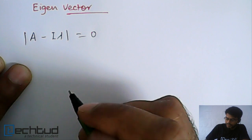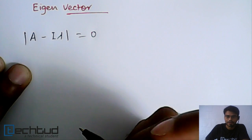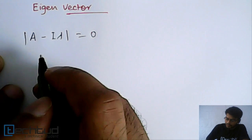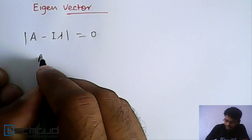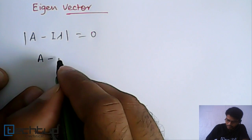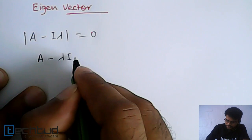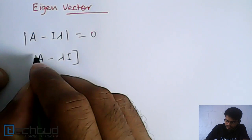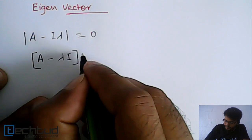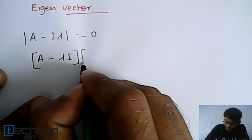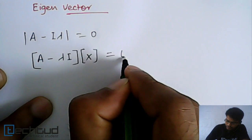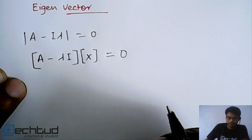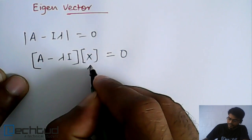For three by three or n by n matrix, we have n values of lambda. Now for each value of lambda, if we take A minus lambda times identity matrix, this is a matrix. If we take x and equate with zero, whatever value of x we find is the eigenvector.